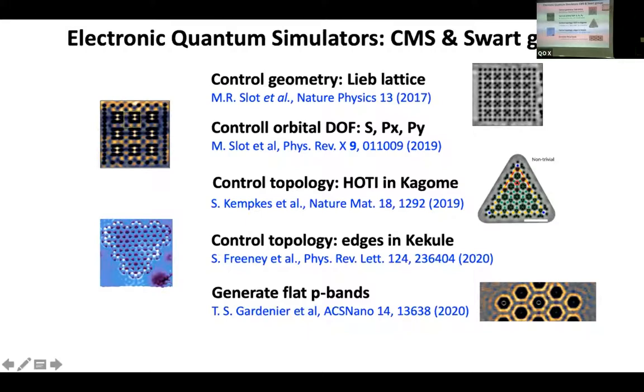So we have been working a lot with this platform, trying to push forward this type of quantum simulators with electrons. So the first thing we did in 2017 was to build the lieb lattice to show that you can use this triangular underlying potential also to build square lattices. Then we have shown how to control orbital degrees of freedom. In this lieb lattice, we could put S orbitals in a certain site, Px orbitals in another site, Py orbitals in another site, and control them in energy and real space with full control of that.